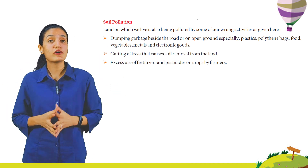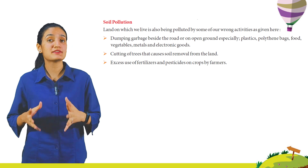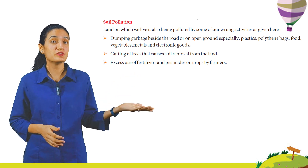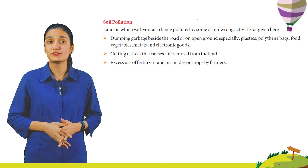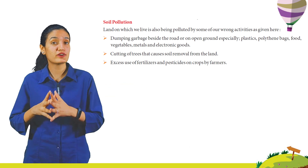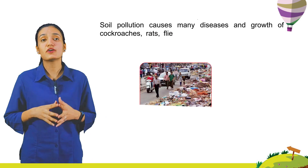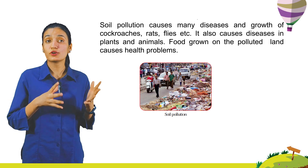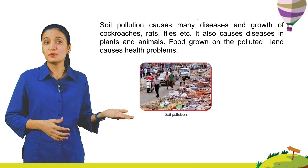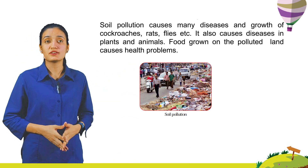The land on which we live is also being polluted by some of our wrong activities, such as: dumping garbage beside the road or on open ground, especially plastics and polythene bags, food, vegetables, metals, and electronic goods; cutting of trees that causes soil removal from the land; and excess use of fertilizers and pesticides by farmers. Soil pollution causes many diseases and the growth of cockroaches, rats, and flies. Food grown on polluted land also causes health problems.